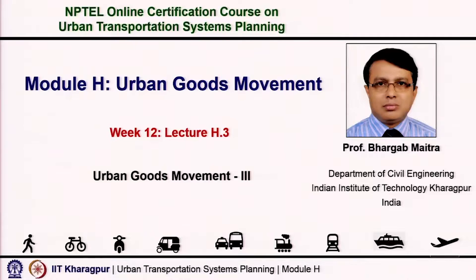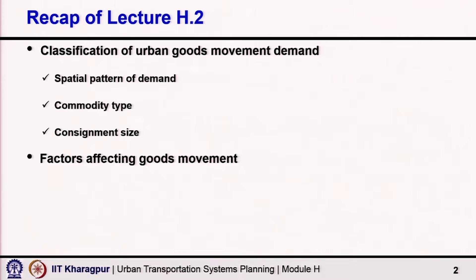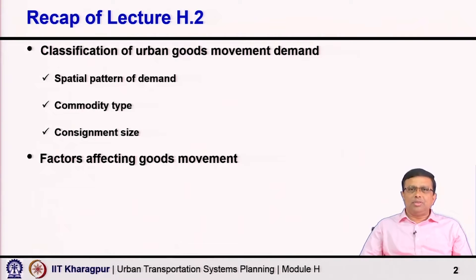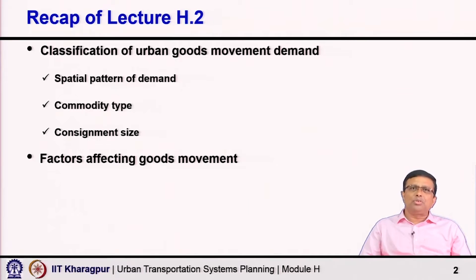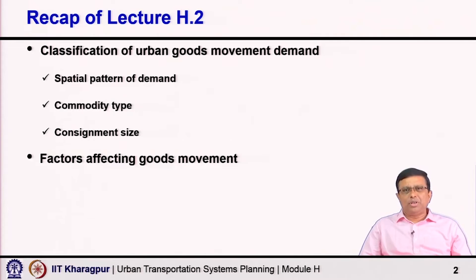Welcome to module H lecture 3. In lecture 2 we discussed the classification of urban goods movement demand. The primary classification could be based on the spatial pattern of demand — external or internal — then based on the type of commodity, and third based on the size of the consignment. Each economic unit has its own spatial pattern of goods transportation demand and the transport requirements are influenced by these factors.